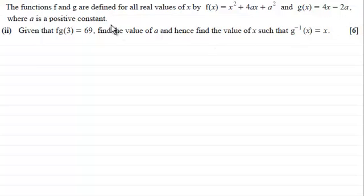In this part we're given that fg of 3 equals 69, and find the value of a and hence find the value of x such that the inverse function of g of x equals x.